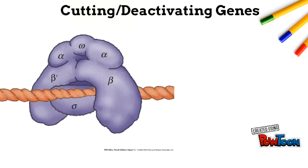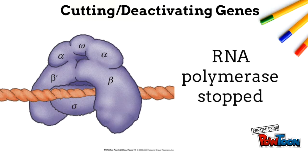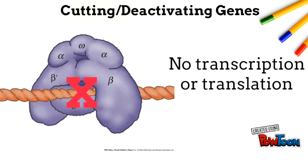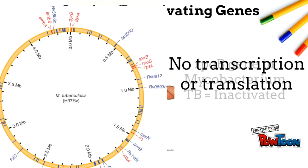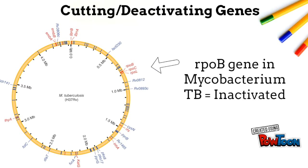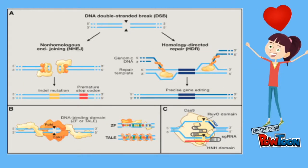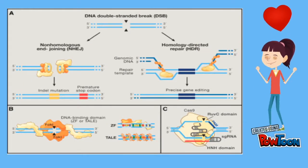By cutting and deactivating a gene, CRISPR would stop RNA polymerase at the genetic level before transcription and translation can even occur. Without these processes, TB cannot transcribe genes, essentially inactivating the RPOB gene. This figure shows how genome editing applications can repair DNA.